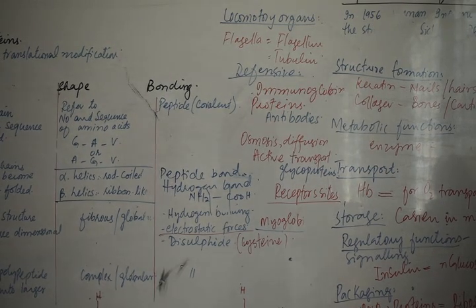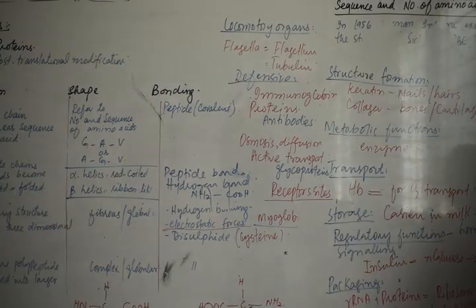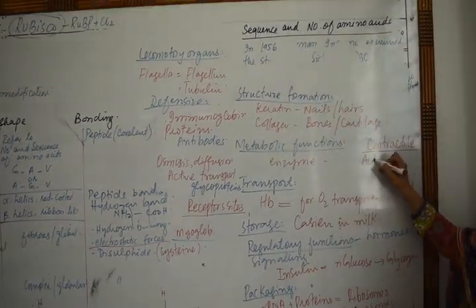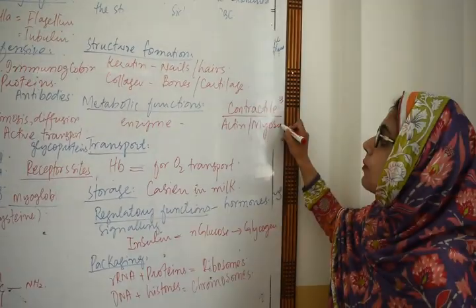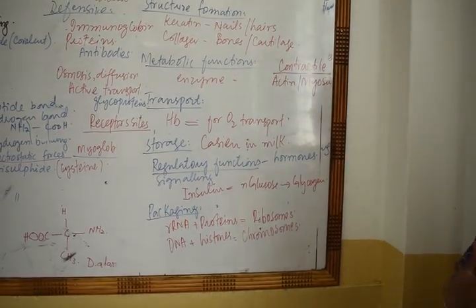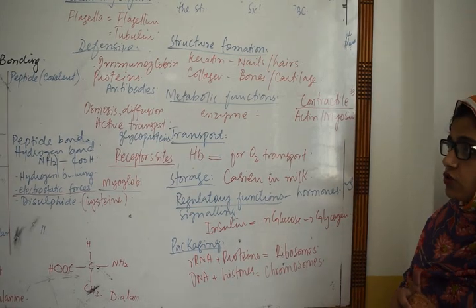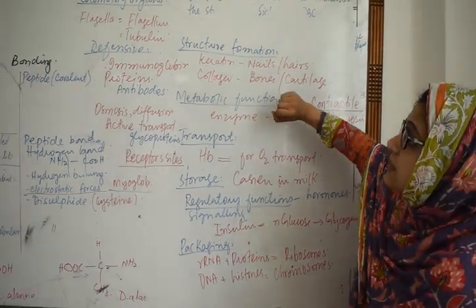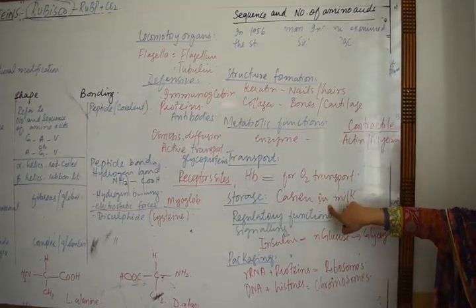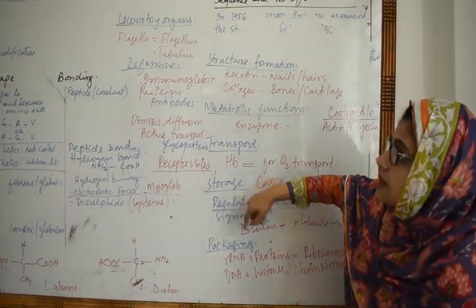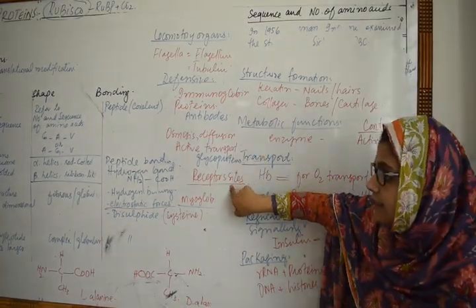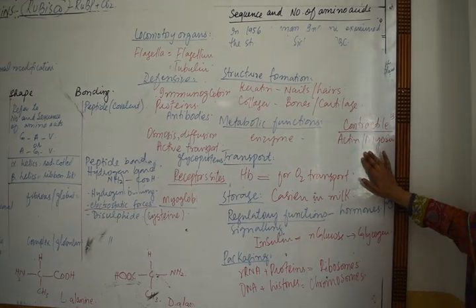One more role is contractile functions. As you have studied in cytoskeleton, actin and myosin both play a contractile role and are fibrous proteins, responsible for contraction and relaxation in muscles. To summarize, the functions of proteins are: 1-structure formation, 2-metabolic functions, 3-transport, 4-storage, 5-regulatory and signalling, 6-packaging, 7-locomotory, 8-defensive, 9-membrane transport, 10-receptor sites, and 11-contractile functions.